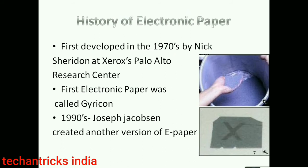What is the history of electronic paper display? They were first developed in 1970 by Nick Sheridan at Xerox Palo Alto Research Center. The first electronic paper display was called Gyricon, and the next version was implemented in 1990.